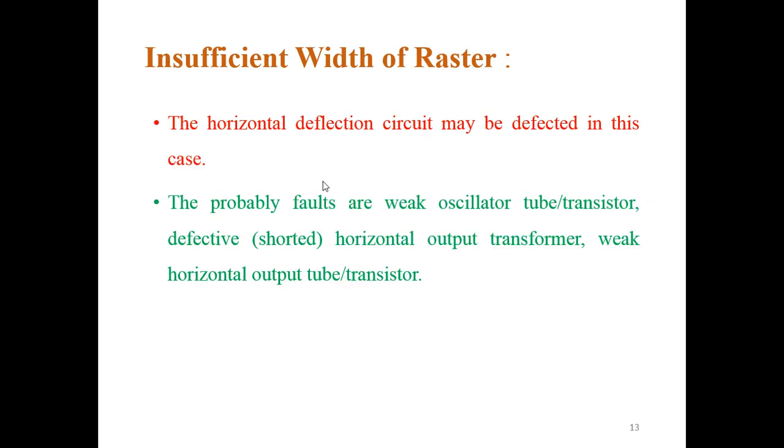Next is insufficient width of raster. Here in this case the horizontal deflection circuit may be defected. This probably fault is due to the weak oscillator tube transistor, or the defected horizontal output transformer, or weak horizontal output tube transistor.